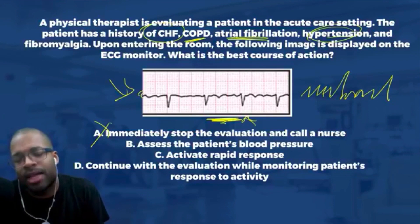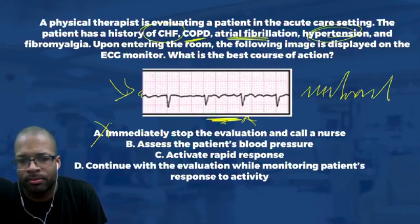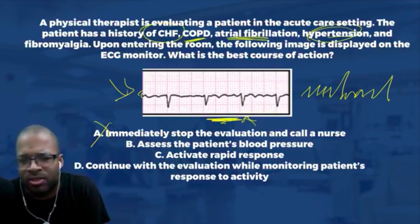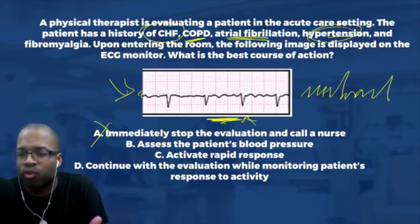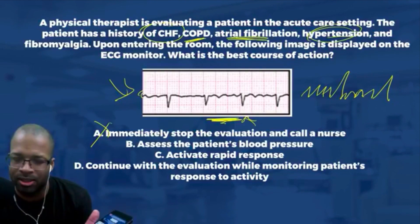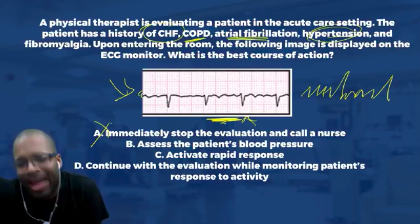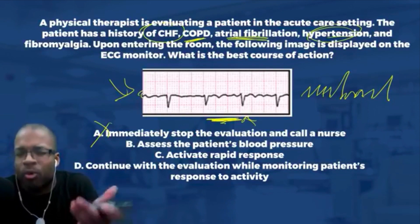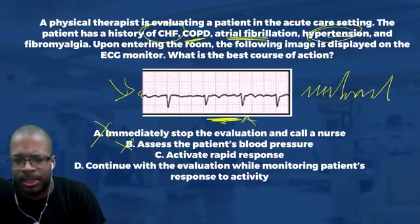If this were the first time the patient ever showed up with AFib, I'd say hold on and reassess. But with a history of AFib showing on the ECG, there's no definitive reason to stop or contact the nurse. Answer A is not the best course of action. Answer B is to assess the patient's blood pressure. When I look at the ECG again, why would I check blood pressure as my next step? Atrial fibrillation can impact blood pressure, but that's not the best course of action right now. Checking blood pressure is a right answer in general, but not the best answer here.